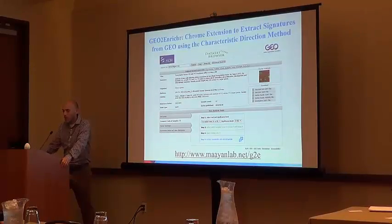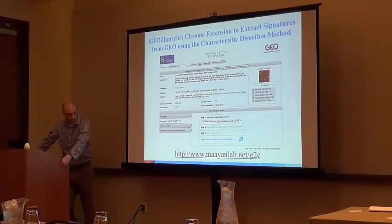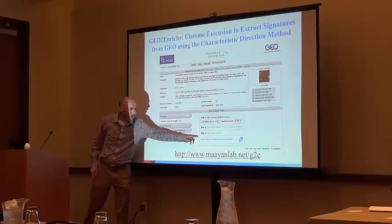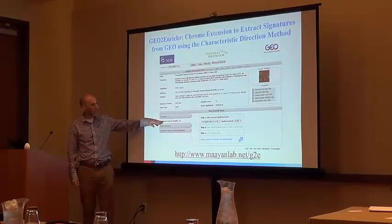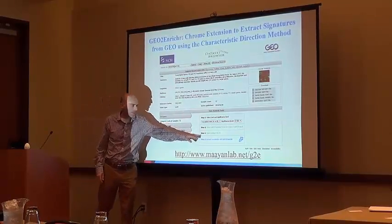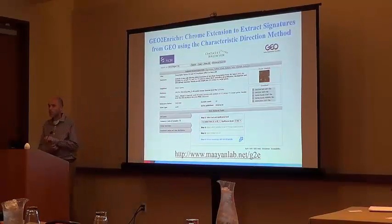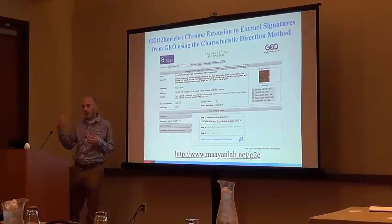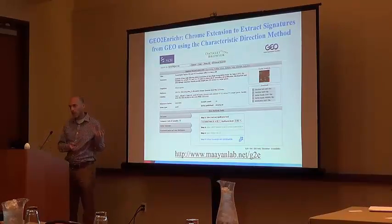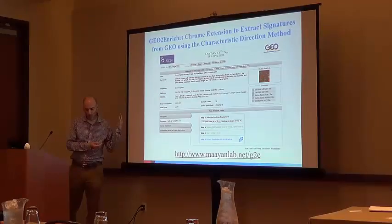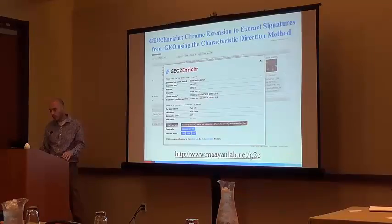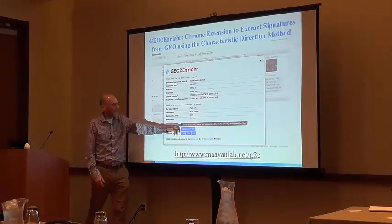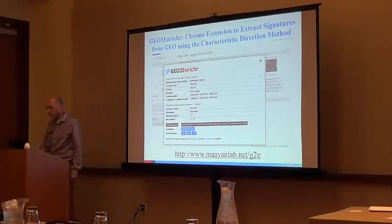The GeoTradure tool is a Chrome extension that gets added to GEO. You install it at the Chrome store for free, and it adds a button to GEO automatically. When you go to GEO, identify your study, and select your samples, you can submit directly — instead of using GEO's built-in query, which is pretty useless. It submits to the Geo2Enrichr tool, which downloads the GEO dataset and computes differential expression using several methods. The default is the characteristic direction method. Then you can select various analysis methods and get results.